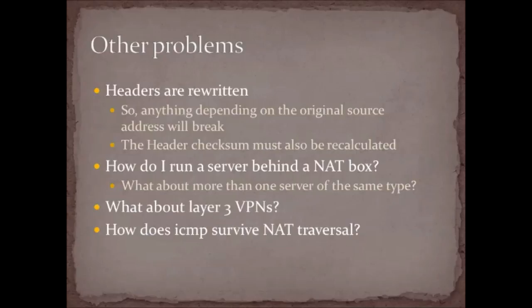Other problems: headers are rewritten, so if anything is looking at headers for specific information, once it goes through the NAT box the IP addresses you might be looking for are no longer there. Header checksums must be recalculated, which is another reason why a NAT box can be slow in addition to the translation table. There's also the question of how to run a server behind a NAT box — you have to port forward to that server, which is what we all do at home behind our Linksys gateways. Another interesting case is Layer 3 VPNs: the minute you spin up a VPN, it encrypts above Layer 3, meaning you can't see the socket and can't do translation — that's why many boxes do VPN passthrough. And of course we already talked about how ICMP survives NAT traversal using the ICMP ID.